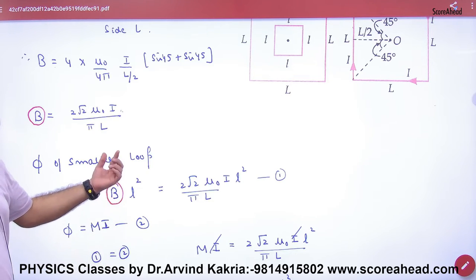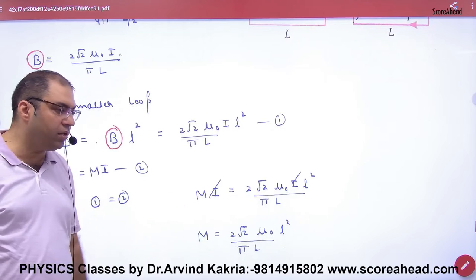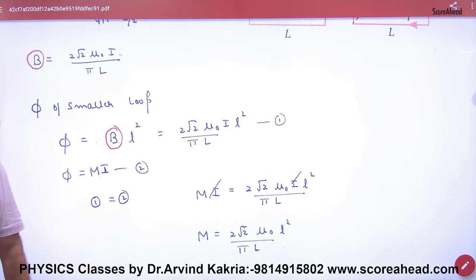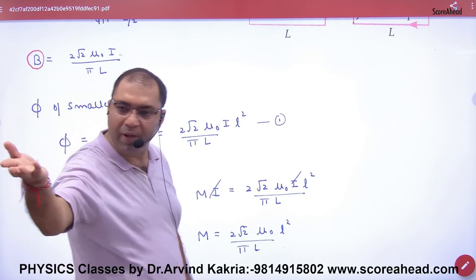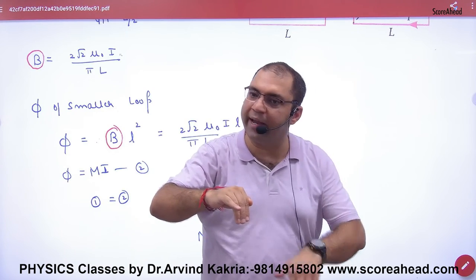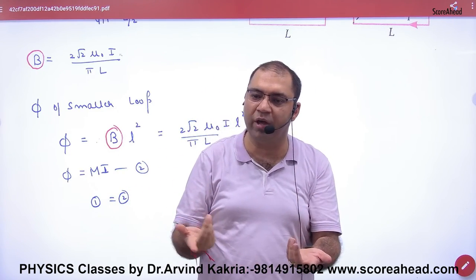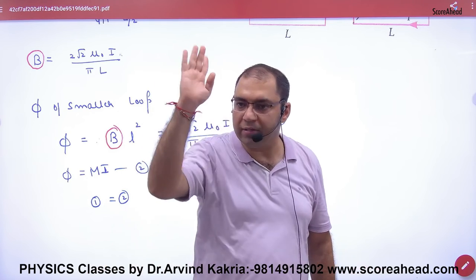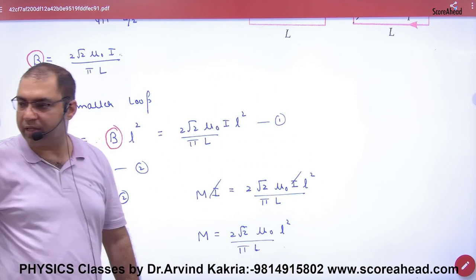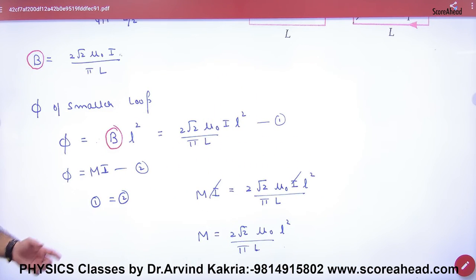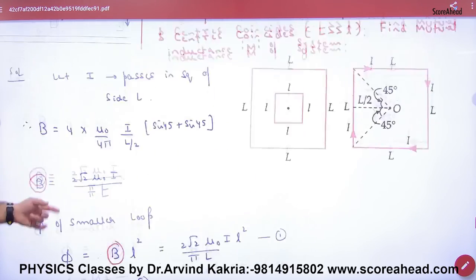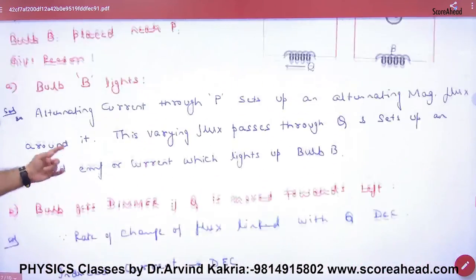Nothing to do, just equate both. i and i cancel. What remains is M, the answer. So you don't have to do anything. Pass current in one, use its B, calculate the second's flux. In the end, use φ = Mi, and M will come. So the points explain how to find M in mutual inductance.